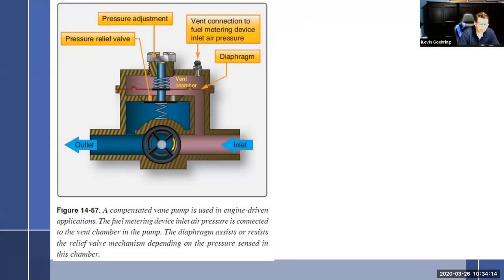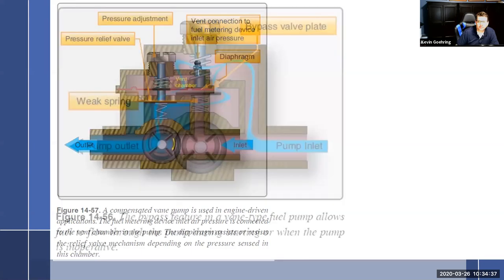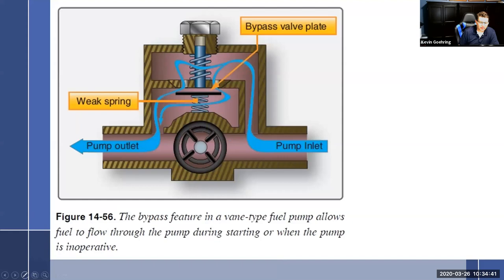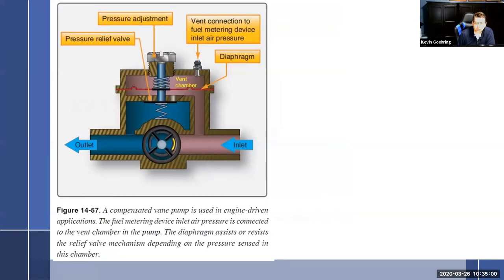Let's talk about something new: a compensated fuel pump. It compensates for altitude - that's the name. This fuel pump is almost exactly identical to the one before it. We've got the actual pump, the bypass plate, and the pressure relief. The only thing that's different is we've added a rubber diaphragm. That's how they always show diaphragms in any kind of drawing - with a little loop that indicates it has slack so it can raise and lower.